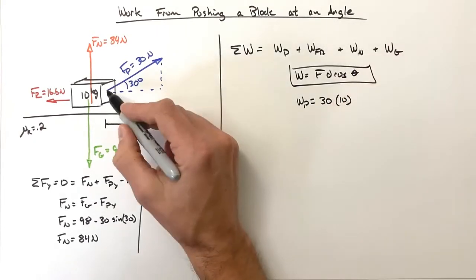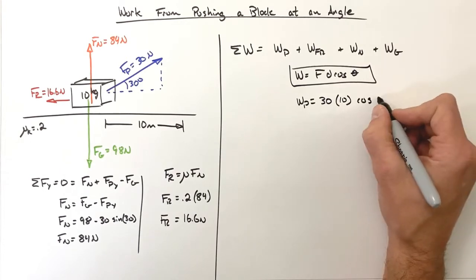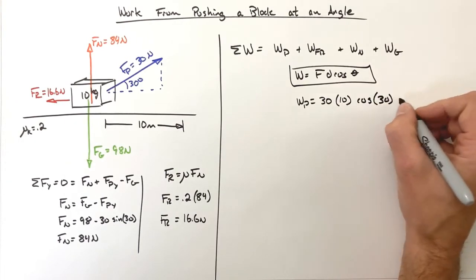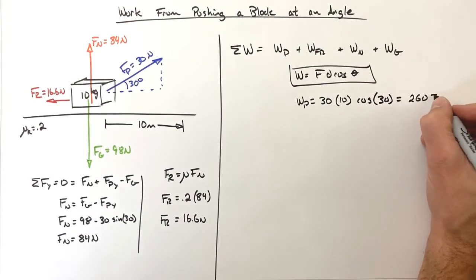The angle between the force and the displacement is 30 degrees, so we have cosine 30. This works out to be 260 joules.